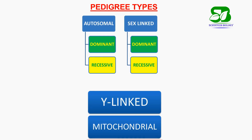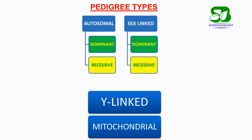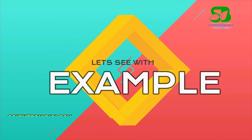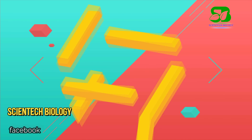Pedigree may be autosomal or sex-linked, and these two may be dominant or recessive, though there are also Y-linked and mitochondrial pedigree types. Now let's see each pedigree type with an example.